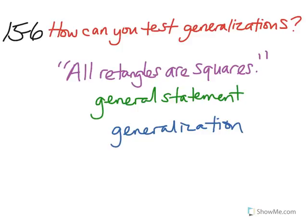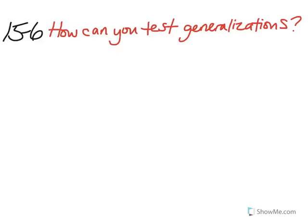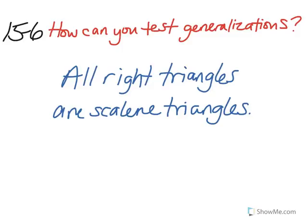Generalizations can be correct or incorrect, but they should always be tested. The last thing I'd like you to do is to try to test one more generalization. Please write the following in your notebook. Here is the generalization that needs to be tested: all right triangles are scalene triangles. Remember to be careful with the clue word here, which is 'all.' Please use pictures as well as what you know about the properties of right triangles and scalene triangles in order to prove this either correct or incorrect.